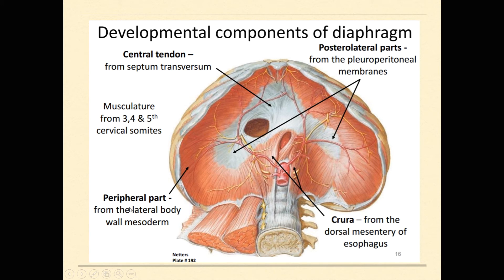Then you have a lateral wall mesoderm doing the peripheral or lateral edges of the diaphragm. You also have posterior lateral parts — the pleural peritoneal membranes — which form the remaining portion. And then you have the crura, which wrap around your esophagus. Crura just means legs around here. The crura are formed from the dorsal mesentery of the esophagus, because the esophagus passes right here, so you form a little bit of that muscle around the esophagus as well.